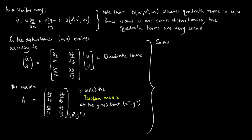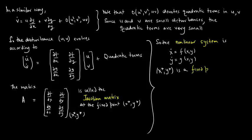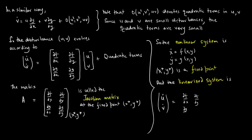The nonlinear system is x-dot = f(x, y), y-dot = g(x, y) with fixed point (x*, y*). The associated linearized system is (u-dot, v-dot) = [[df/dx, df/dy], [dg/dx, dg/dy]] evaluated at (x*, y*), times (u, v).